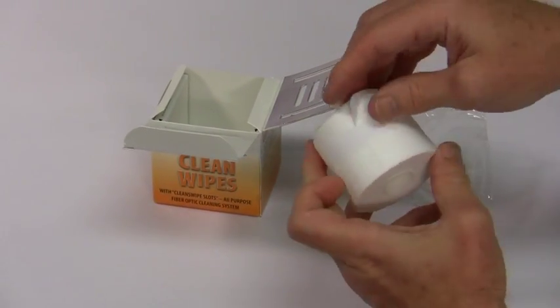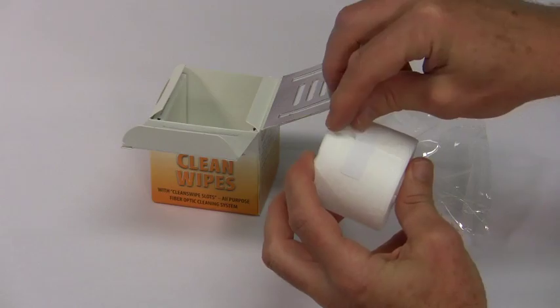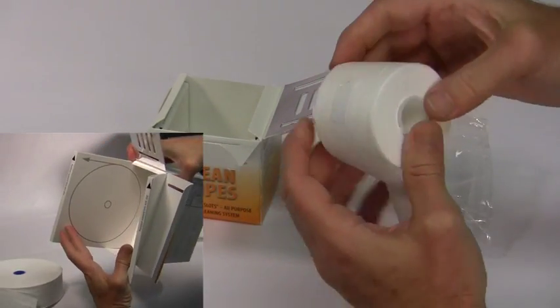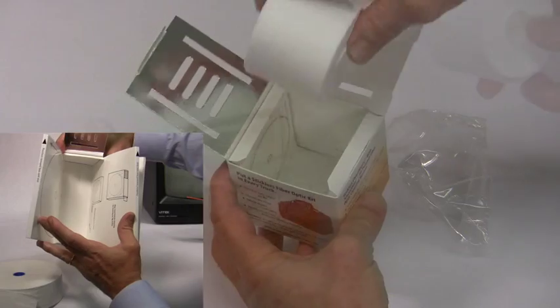Next, free the first wipe on the roll by tearing the packing tape. Look to the illustration inside the box for assistance in how the wipe should unwind.